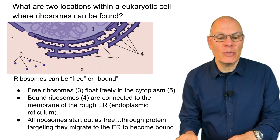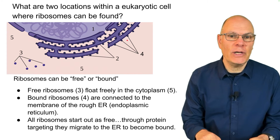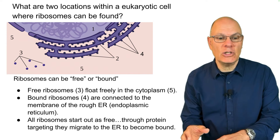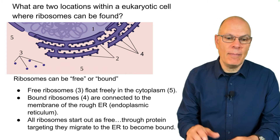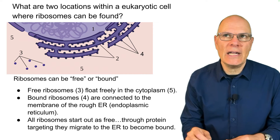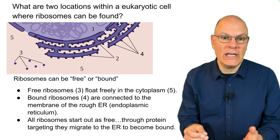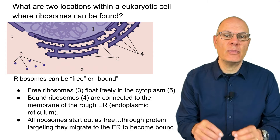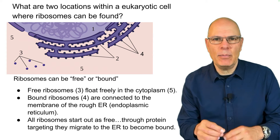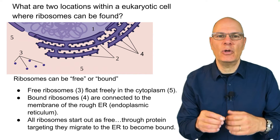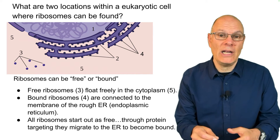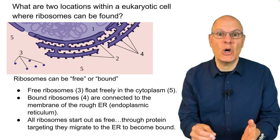All ribosomes start out as free, though through a process called protein targeting, they migrate to the ER to become bound. They do that if the proteins the ribosomes are creating are destined to be put inside a vesicle so they can go to the Golgi, the membrane, or a lysosome.